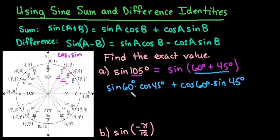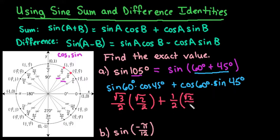So the sine of 60, we would look at the 60 degrees and we would look at the second one, is the square root of 3 over 2. Times the cosine of 45 degrees, so the cosine of 45 degrees is square root of 2 over 2. And then we're going to add to that the cosine of 60, so now we're going to look back at the 60 cosine is 1 half, times the sine of 45 which is square root of 2 over 2.